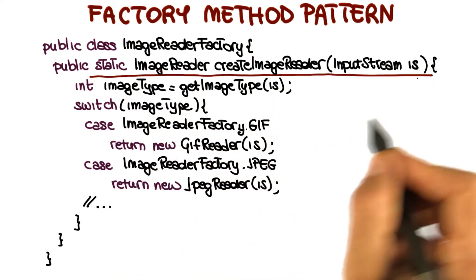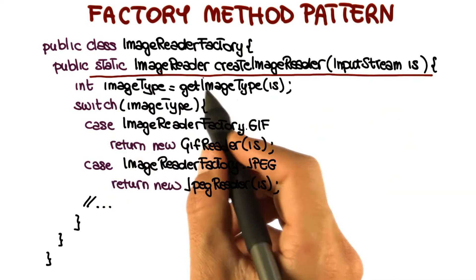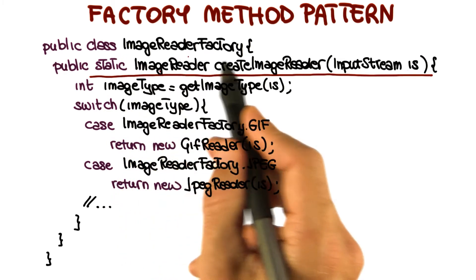As you can see, the method takes an InputStream as input and returns an object of type ImageReader. It's static, so we can invoke it even if we don't have an instance of the ImageReaderFactory.